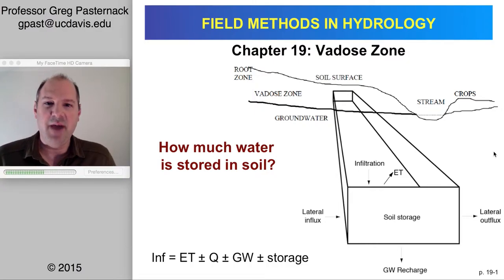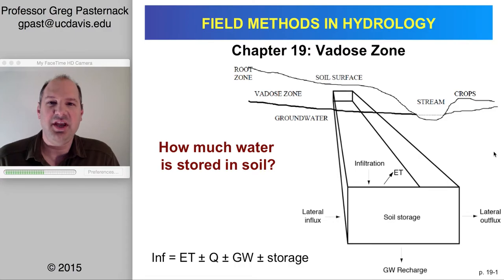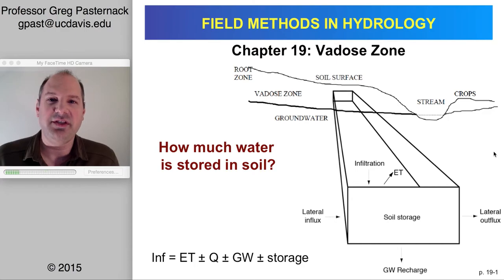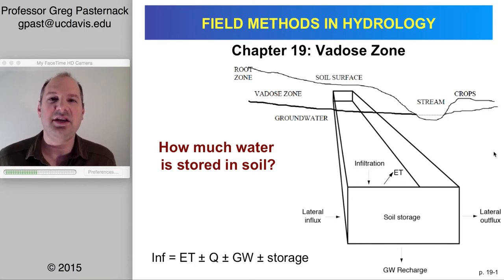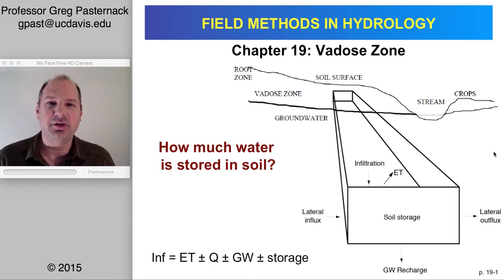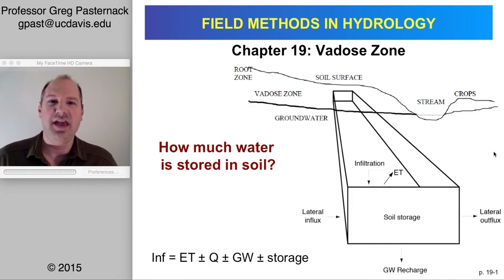This is the video podcast for Chapter 19 of Field Methods in Hydrology, dealing with Vadose Zone Hydrology, which also relates to soil physics. The fundamental question we want to address here is how do you measure how much water is being held in the soil? There are going to be two primary technologies and variables that we're going to measure to get at that.